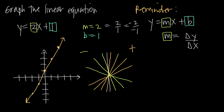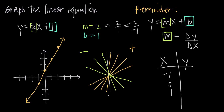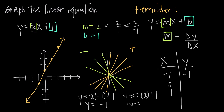You can always check your work by plugging in points to the equation and double-checking they're along the line you drew. We have y equals 2x plus 1. We can make a chart of points for x and y — the easiest values to pick are negative 1, 0, and positive 1. Plugging in x equals negative 1: y equals 2 times negative 1 plus 1, giving y equals negative 1. Plugging in x equals 0: y equals 2 times 0 plus 1, giving y equals 1. Plugging in x equals 1: y equals 2 times 1 plus 1, giving y equals 3.